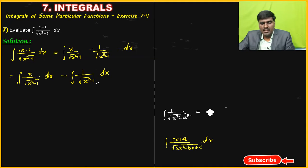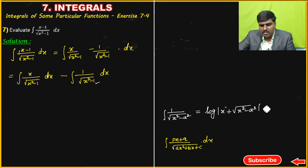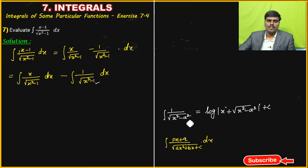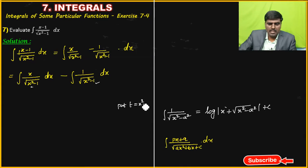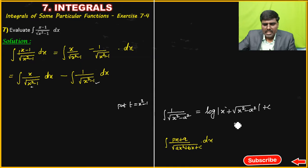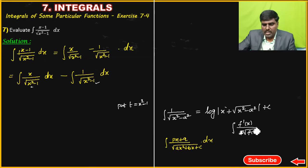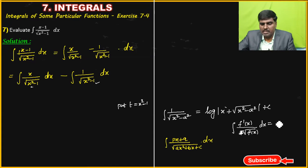What is the formula? Log of modulus of x plus square root of x squared minus a squared plus some constant c. For the first integral, put t equal to x squared minus 1 — that is the substitution method. The formula used is: integration of f'(x) by square root of f(x) dx is equal to 2 into root of f(x) plus some constant c.